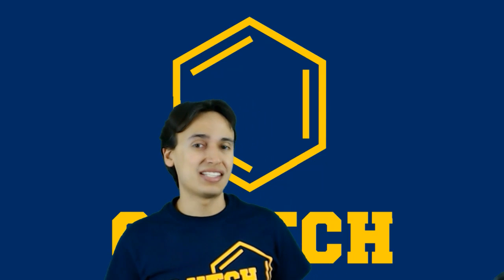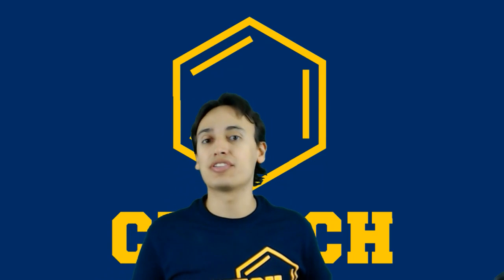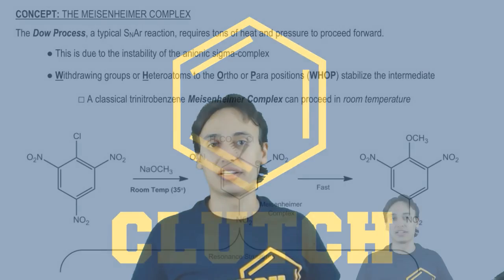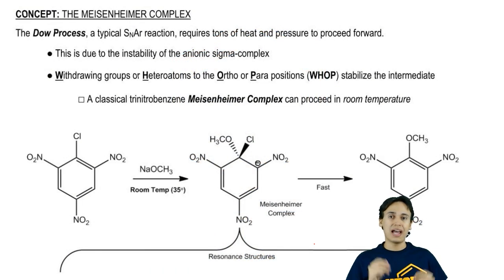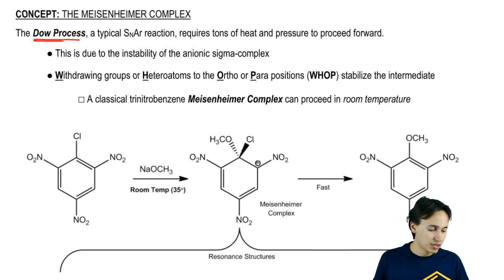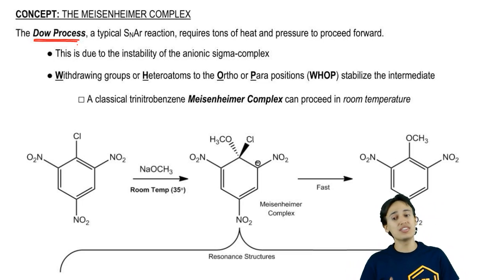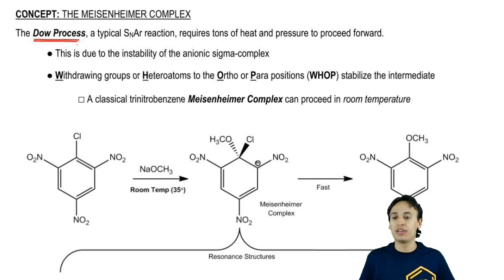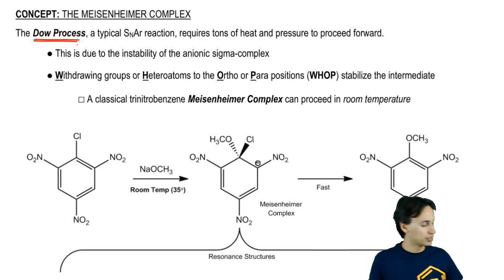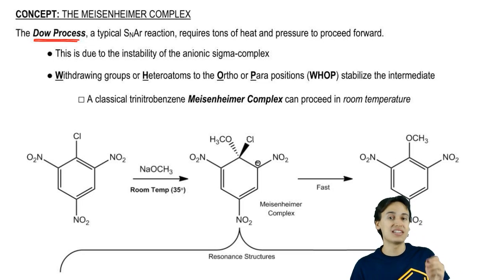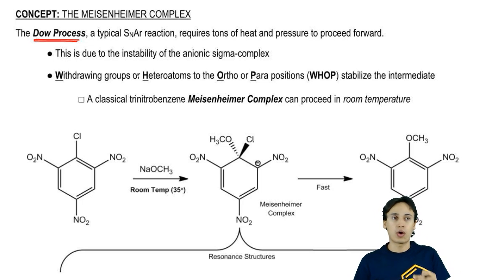Now that we understand a little bit about the SNAr mechanism, let's talk about something called the Meisenheimer complex. As mentioned earlier, the Dow process was a typical SNAr reaction, but it required tons of heat and pressure to proceed forward. This is due to the instability of the anionic intermediate. Scientists figured out that there are ways to naturally stabilize the anionic intermediate that are going to make it require less heat and less pressure.